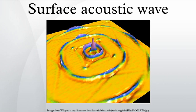A surface acoustic wave is an acoustic wave traveling along the surface of a material exhibiting elasticity, with an amplitude that typically decays exponentially with depth into the substrate.